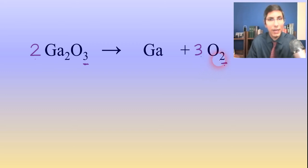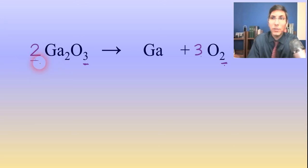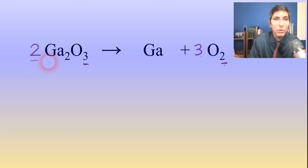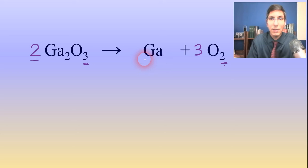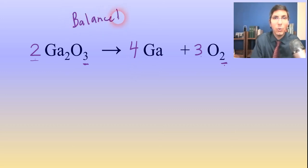I have 6 oxygens on both sides. Now I have to do the same thing with Ga, the gallium. I had 2, but I just multiplied that by 2. Anytime that I put a coefficient in front of something, I'm multiplying everything that that coefficient is in front of by that number. So 2 times 2 is 4 Ga's. I only have 1 Ga over here, so I've got to multiply this one by 4 to make it balance out. So now I have 4 galliums on both sides of the arrow, and I have 6 oxygens on both sides of the arrow. And this is a balanced equation.